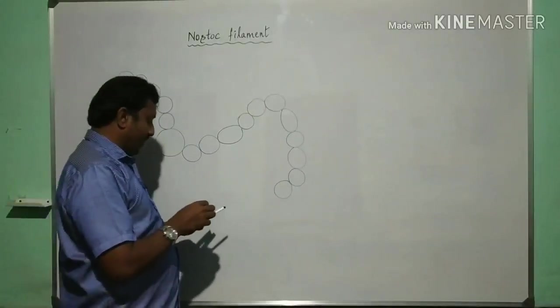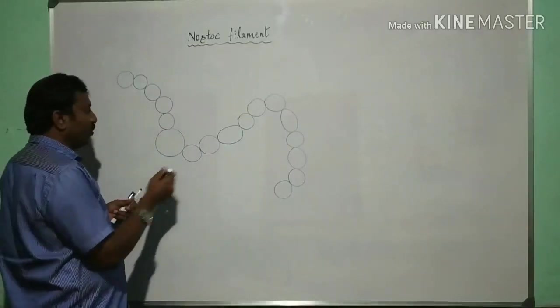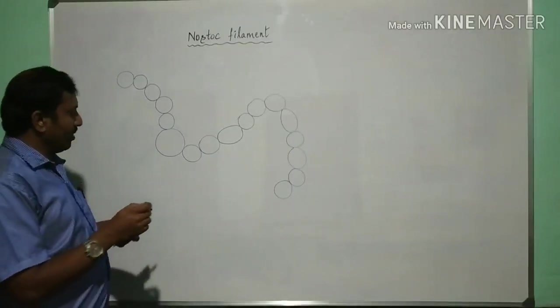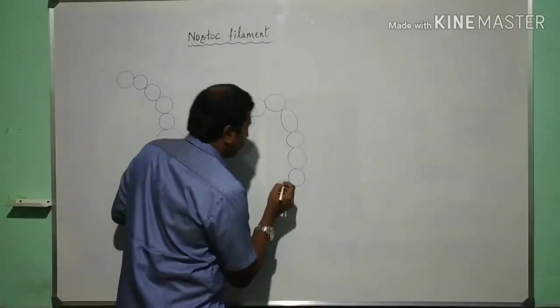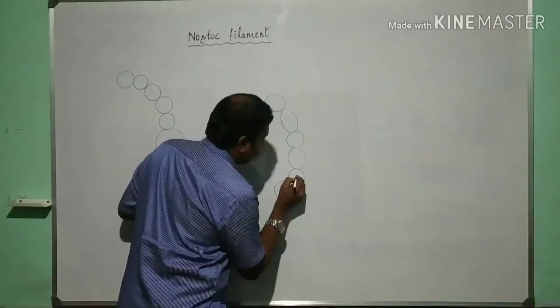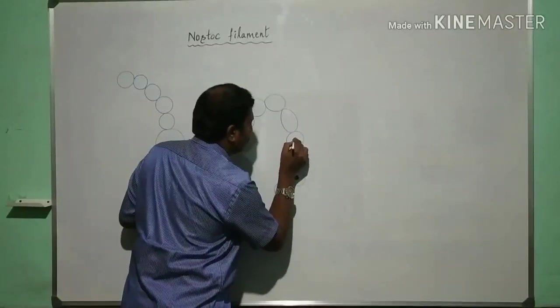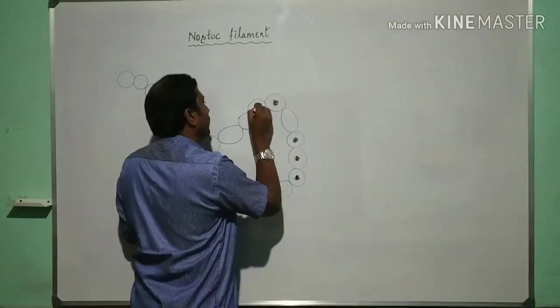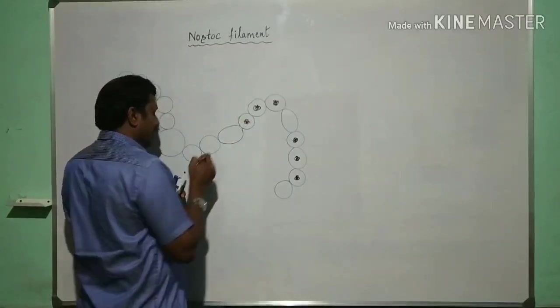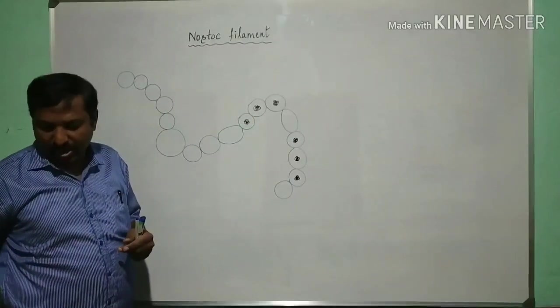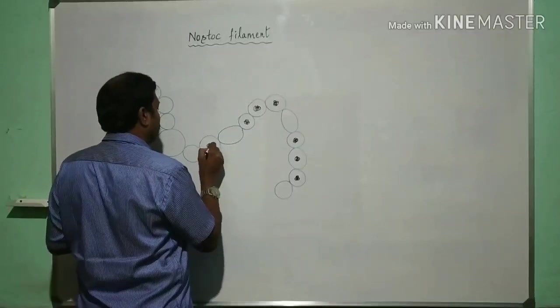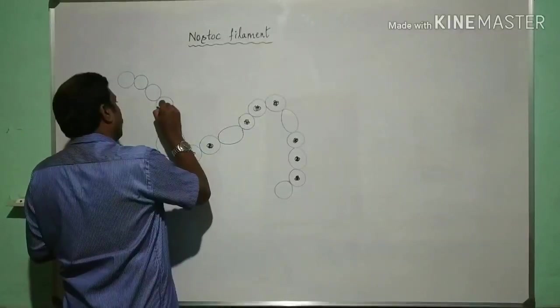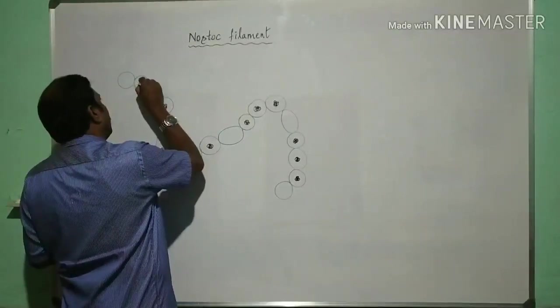And it consists of cells with the cell wall, cell membrane you cannot see here. You can draw the naked DNA. Since it is a prokaryotic, the DNA portions within it, without any proteins associated with it.